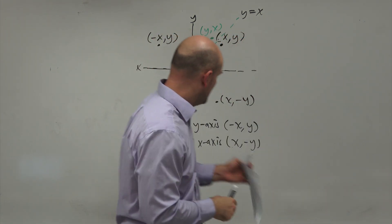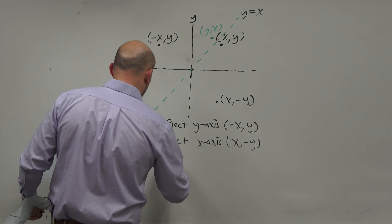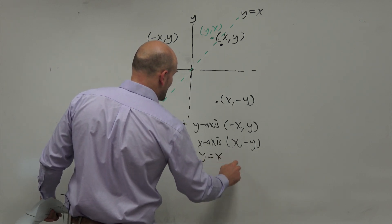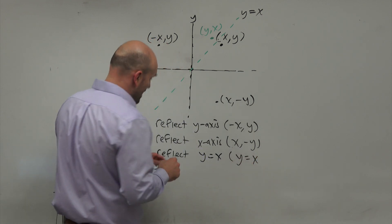So when we want to reflect the Y equals X line, all we're simply going to do is swap the X and the Y.